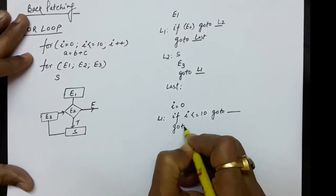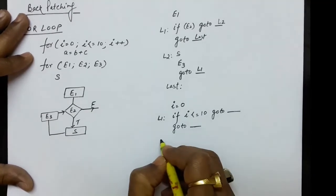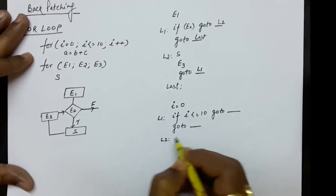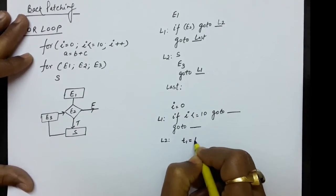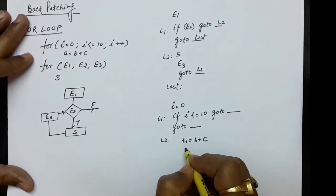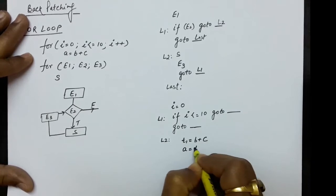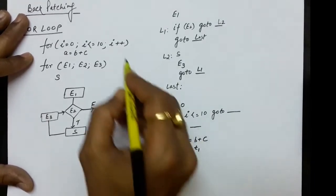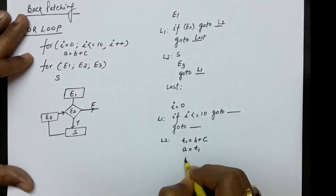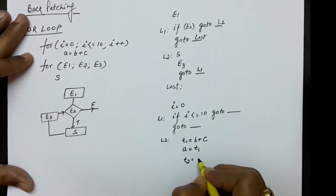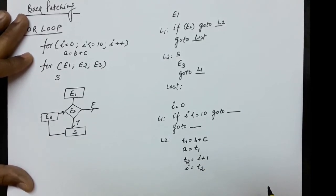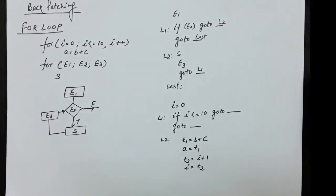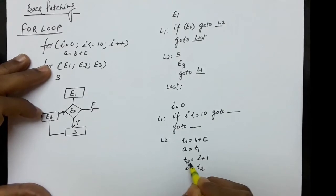If the condition is not true, we go to the last level — this is the unconditional jump. If the condition is true, at level L2 we execute A = B + C. In three-address code: T1 = B + C, then A = T1. Then we do i++, which is i = i + 1. In three-address code: T2 = i + 1, then i = T2, because we cannot use the same variable on both sides.